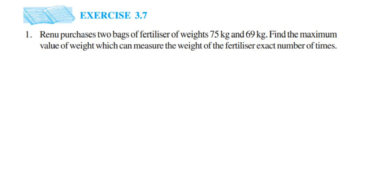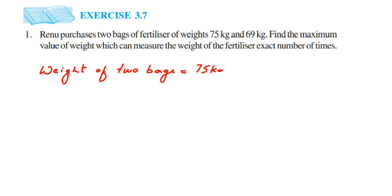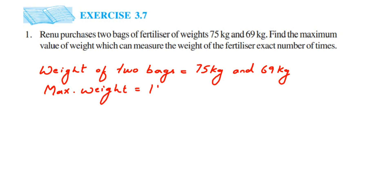They have given the weight of two packs: 75 kg and 69 kg. Now, the maximum weight is nothing but the HCF of 75 and 69. There are many ways of finding the HCF, but here I will use the division method — that is, we are going to divide the given numbers by prime numbers.